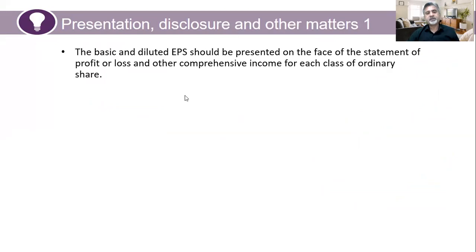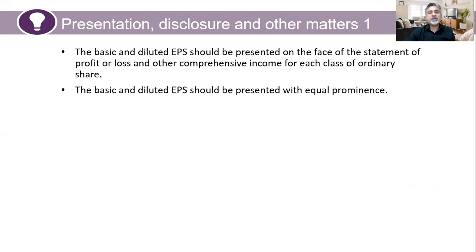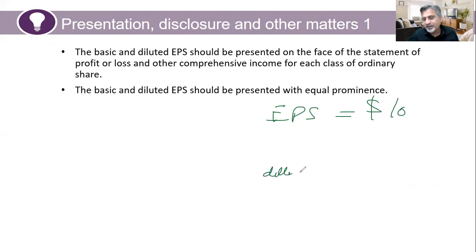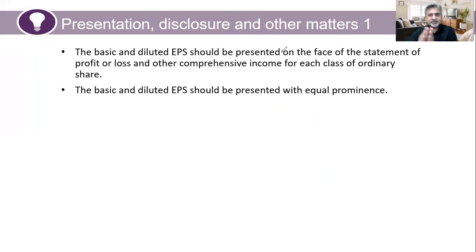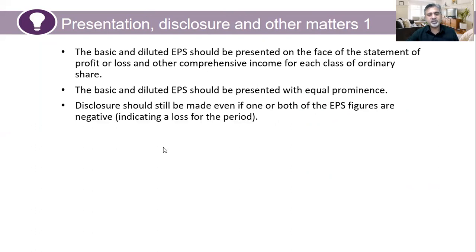Regarding presentation and disclosure: basic and diluted EPS should be presented on the face of the statement of profit or loss for each class of ordinary share. They must be presented with equal prominence, so you cannot hide the diluted EPS figure. Disclosures should still be made even if one or both EPS figures are negative, indicating a loss for the period.